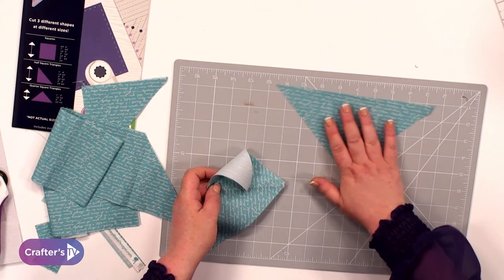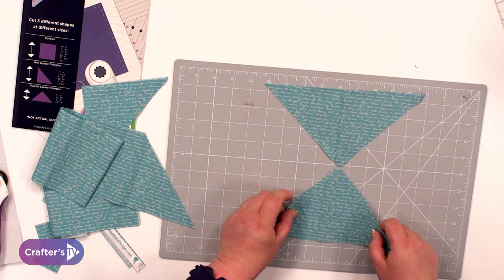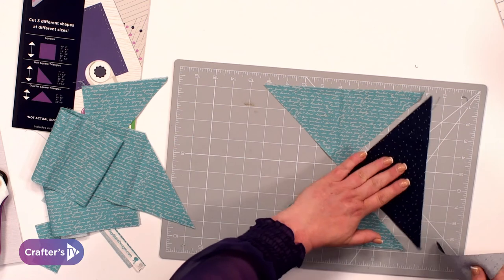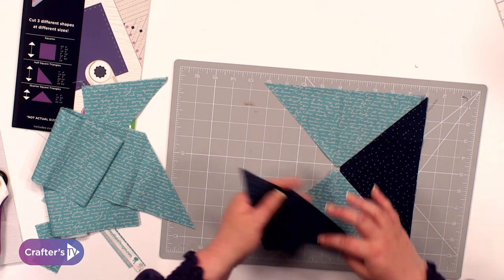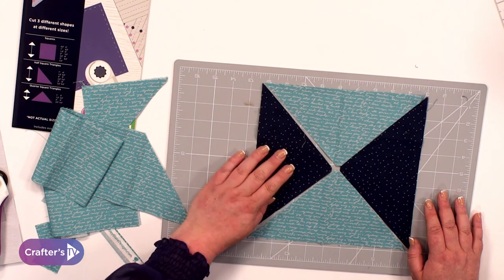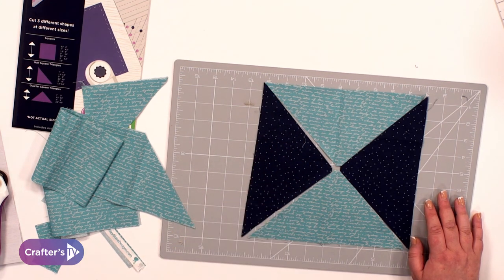So how these work and how these go together is you're going to have four different colors or opposite colors like this and you're going to put them together. And this one's actually going to make an eight inch finished block when it's finished.